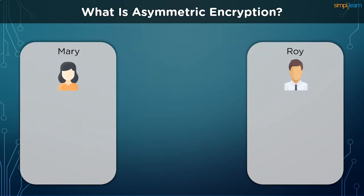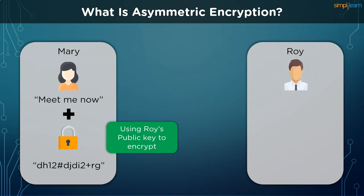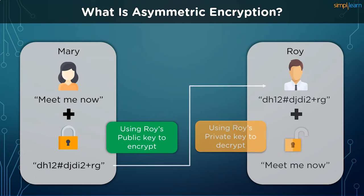In the current scenario, if we have two people, Mary and Roy, who want to send messages to each other, Mary must use Roy's public key to encrypt the information before passing on the ciphertext to Roy. On receiving the ciphertext, Roy can use his private key to decrypt the data and get the plaintext back. As we highlighted earlier, both the keys belong to Roy, who is the receiver in this particular interaction.